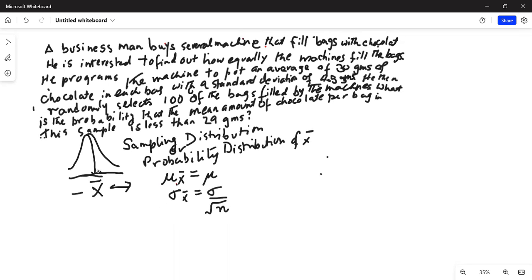So the center is mu x bar equals mu. In this case, mu x bar is equal to 30, because mu is 30. Now sigma x bar, we need to calculate, is equal to sigma, which is 4.5 divided by square root of 100. So 4.5 divided by 10 is 0.45.